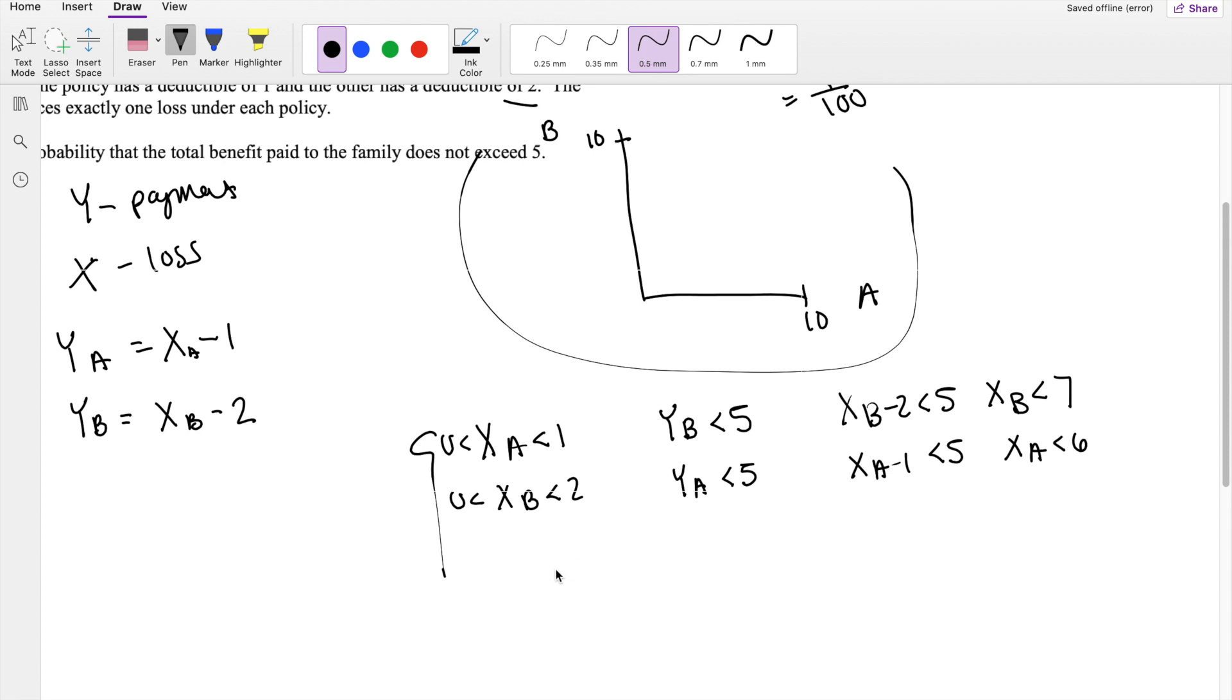And lastly, there is a possibility that A is between 1 and 2. When loss is between 0 to 1, X_B is less than 7. So if this is 5, this is 7. And if loss is between 0 and 2, Y_A could be 5, so if this is 5, it's like here.